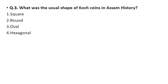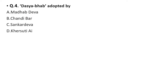Question 3: What was the usual shape of Koch coins in Assam history? Option A: square, option B: round, option C: oval, option D: hexagonal. The correct answer is round — the shape of the Koch coins was round.